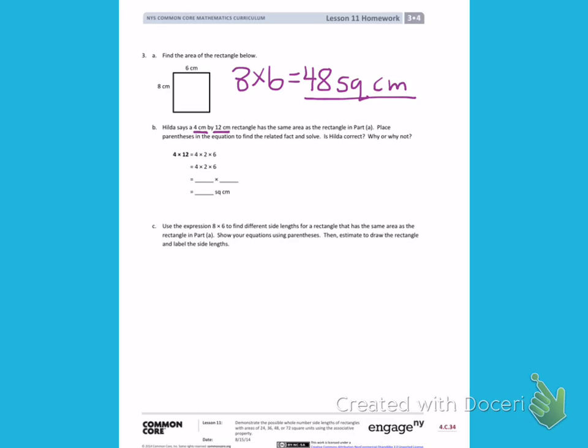Why or why not? So you can see in letter B, we already have 4 times 12 broken apart into 4 times 2 times 6. I can see they broke apart the 12, so I'm going to put parentheses around 2 times 6.